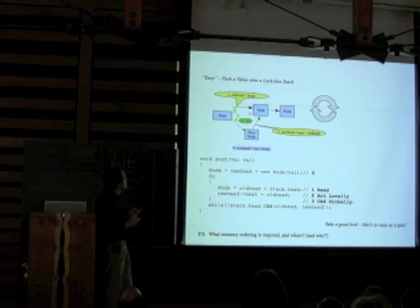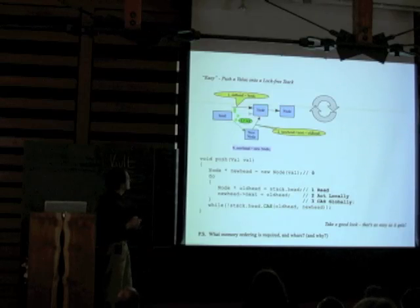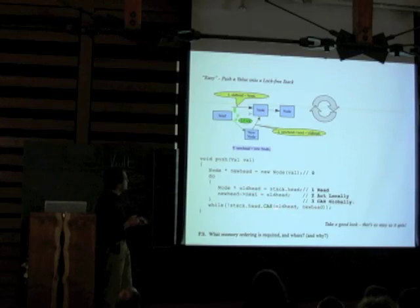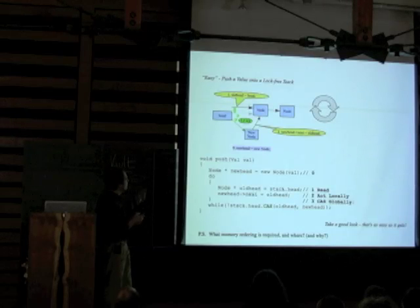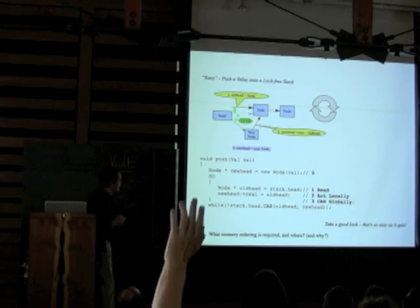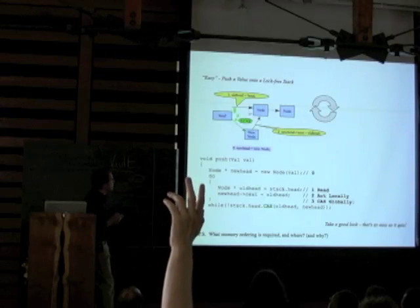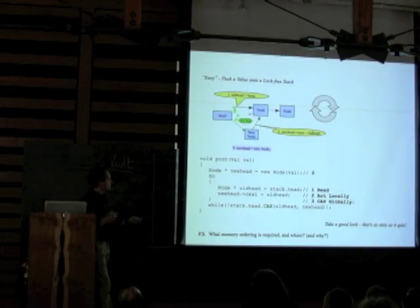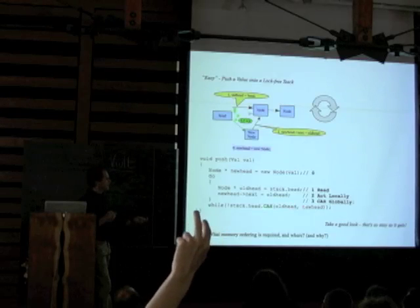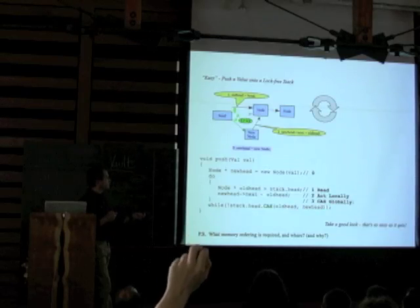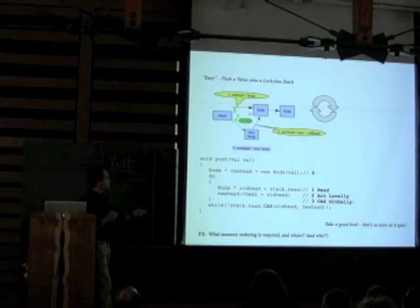That's the simplest bit of lock-free programming and it works. Memory ordering: most likely a release on the CAS because I'm publishing data — 'here's my new data, I'm releasing it out to the world.' We do all our local prep work and then publish the new node through the CAS, which is when it becomes part of the shared stack.